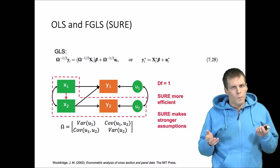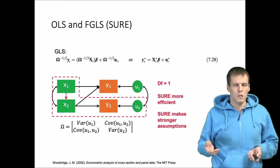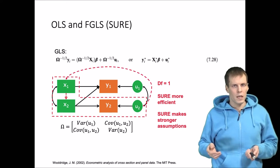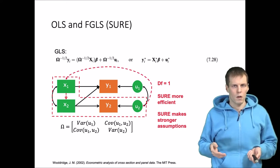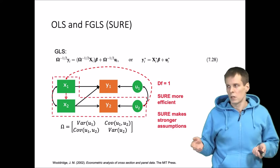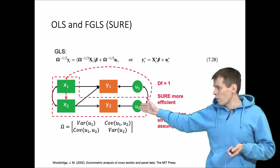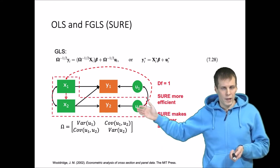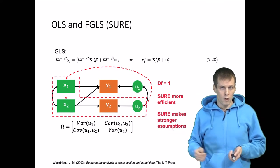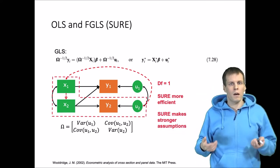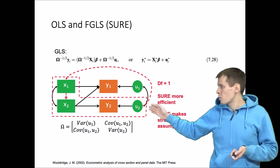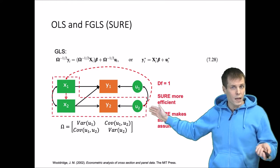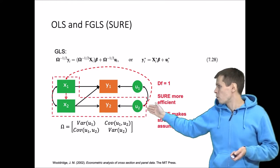But that efficiency comes with a cost. We make an additional assumption that OLS does not make, and the assumption is that all the predictors are uncorrelated with all the error terms. So if we estimate this model of y2 on x2, we don't need to make any assumptions about x1 because that's not included in the OLS model. But in seemingly unrelated regressions, we need to assume that the predictors are uncorrelated with all errors. So x1 is uncorrelated with u2 even if x1 is not used as a predictor of y2.